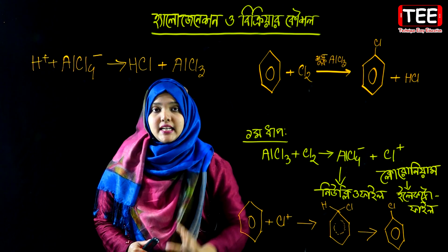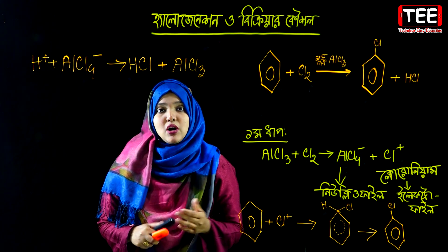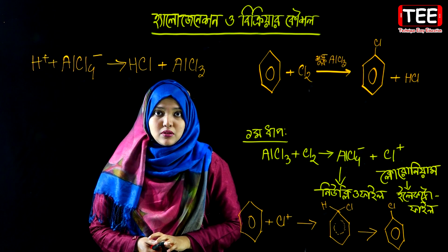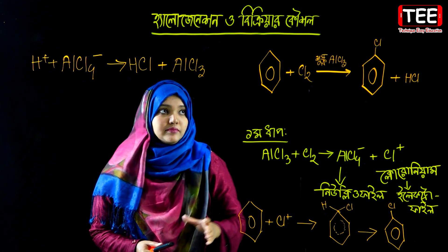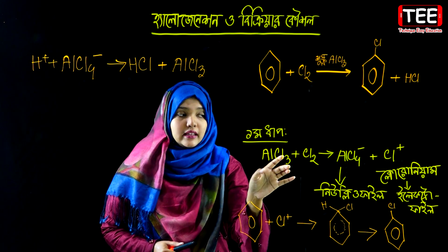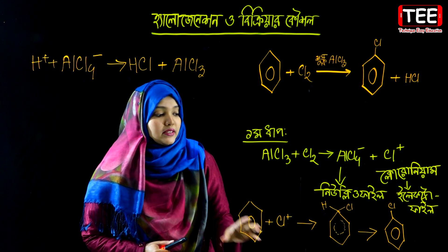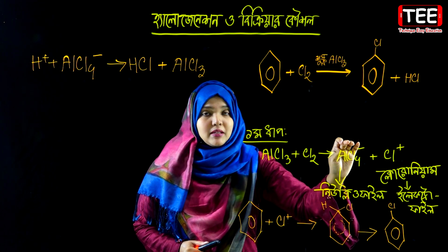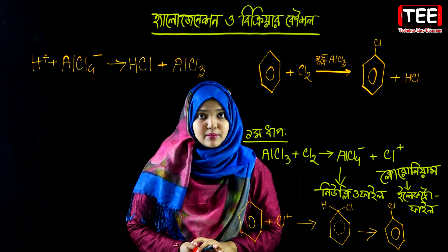The aluminum chloride catalyst is regenerated and returned to its original state — confirming it acts as a true catalyst. In this way, the electrophilic substitution reaction is completed: the electrophile is formed, it attacks the benzene ring, a complex intermediate is created, and finally the substitution product is obtained.